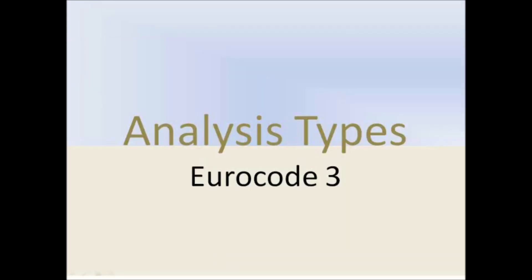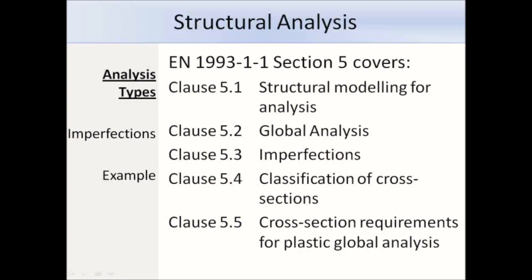This is the first section on analysis types. Structural analysis is covered in section 5 of EN 1993 part 1.1 and there are five subparts. The clauses we will be looking at in this e-lecture are clauses 5.2 and 5.3. Clause 5.2 is about global analysis and there are four types of global analysis. Clause 5.2 also explains how second order analysis should be conducted. Clause 5.3 is about imperfections, which we will cover in more detail later.